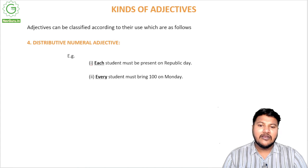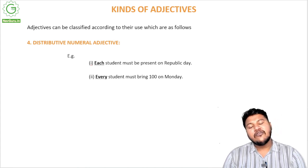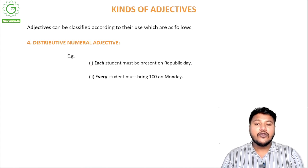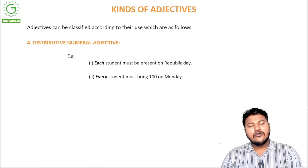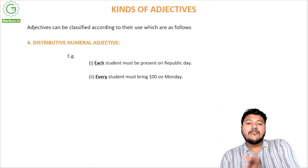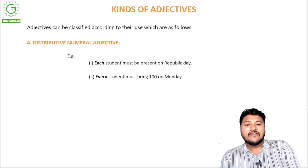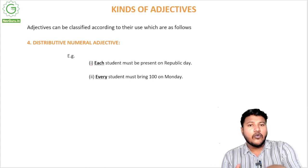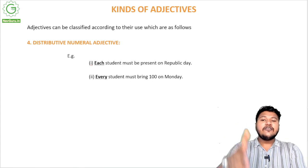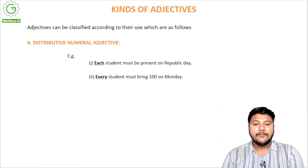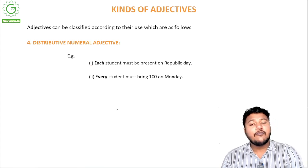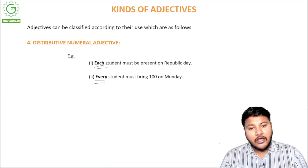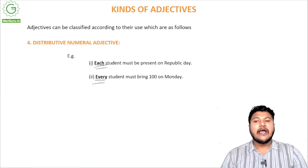The fourth type is the distributive numeral adjective. When you already have a numeral adjective and you classify or distribute that number into separate categories, that becomes distributive. For example: there are 100 students and 'each student must be present on Republic Day' — 'each' is the distributive numeral adjective. Or 'every student must bring 100 rupees on Monday' — 'every' distributes across all 40 students in the class. So these are the four major kinds of adjectives.